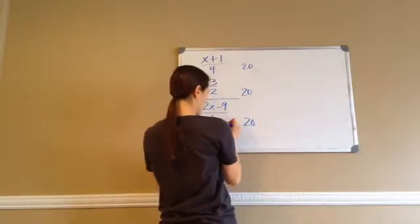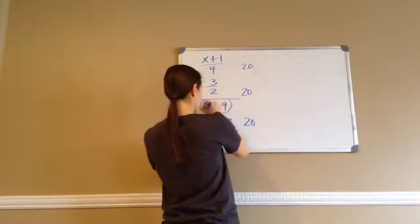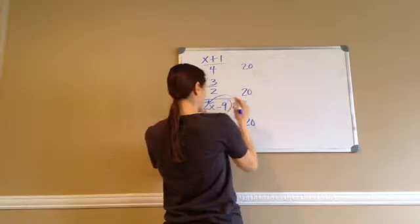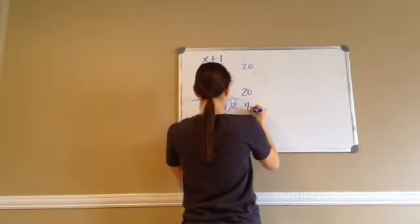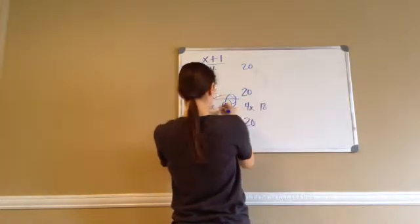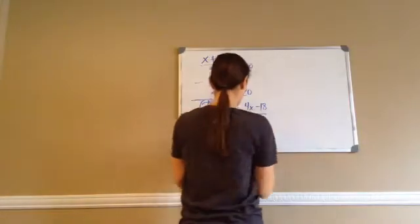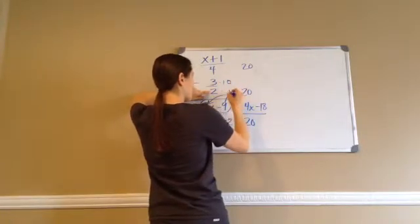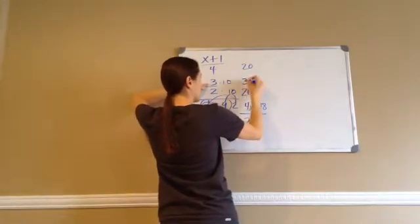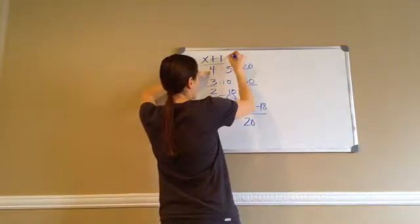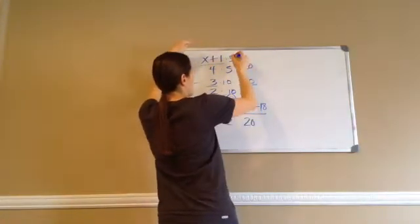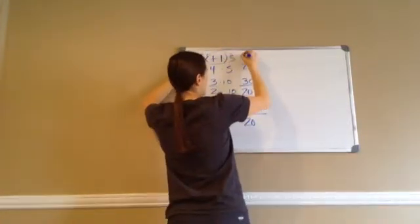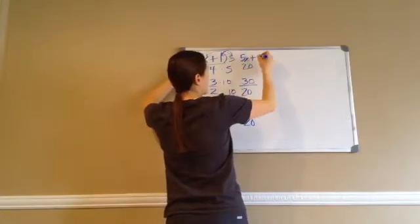So 10 times 2 gave me 20. This has to be multiplied by 2 in all of it: 2 times 2x makes 4x, and 2 times 9 is 18, with a minus in there — all over 20. Then 2 times 10 is 20, so times 10. What I do to the bottom I have to do to the top — that makes 30. And then times 5. Remember, this 5 applies to the whole part of it: 5 times x is 5x, plus 5 times 1 is 5.